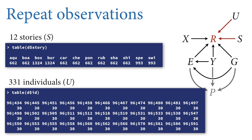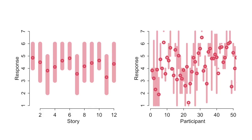To remind you, we were working with the Charlie problem data and we had tried to work through the different complex moderators of the treatment effects that you can see in the DAG on the right of this screen. But we had stopped when we had reached the last two: the 12 different stories in the data set — which are different scenarios used to construct specific Charlie problems — and the 331 individuals who volunteered their time to rate the different Charlie problems.